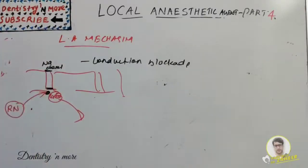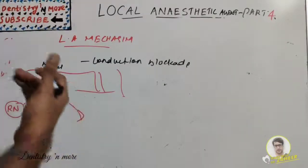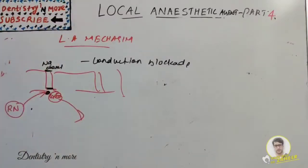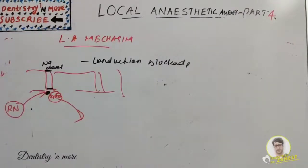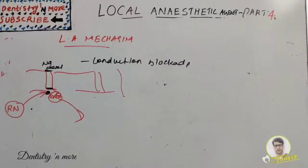With the sodium channel blocked, there is decreased sodium conductance, decreased rate of electrical depolarization, failure to achieve threshold potential level, lack of propagated action potential, and ultimately conduction blockade. So the sodium ion channel is blocked in pain neurons. In summary, we discussed classification of local anesthesia, dissociation of the LA molecule from cation to base form, the Henderson-Hasselbalch equation, and the mechanism of sodium channel blockade.